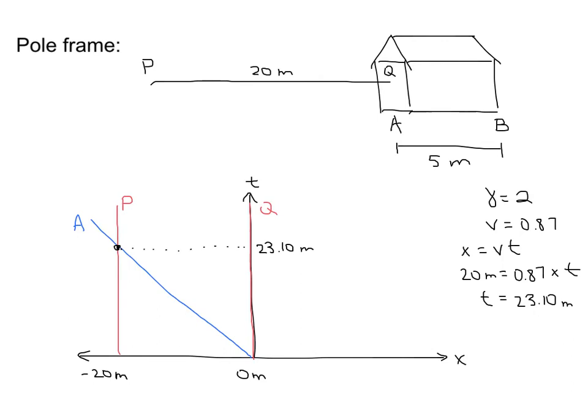Now, A is the next point to consider. In the pole frame, A starts at Q at time 0, at space coordinate 0, and races towards the other end of the pole, which is P. So it will hit P at some time. Because we know that gamma equals 2, and we've calculated our velocity to be about 0.87, the time comes out to be 23.10 meters. Note that you won't get 23.10 if you use 0.87, because I did not round on my calculator.